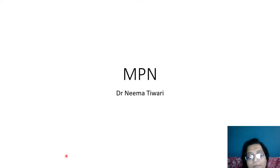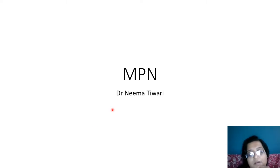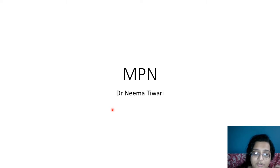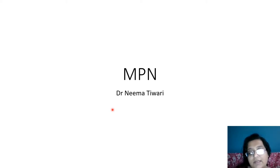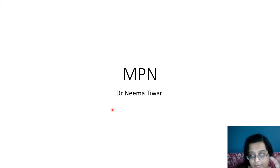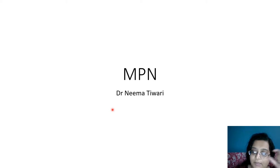Welcome back to the second part of myeloid neoplasm updates. Today we will be dealing with the myeloproliferative neoplasms. As previously discussed, the new classification keeps molecular markers and mutations in mind — mutations are becoming the game-changers in hematology and hematological malignancies. Changes in myeloid are mostly based on clinical spectrum and mutations, not morphology. Let's start with the myeloproliferative neoplasms.